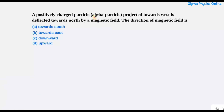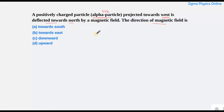In this question, there is an alpha particle — a positively charged particle — projected towards the west, and under the influence of a magnetic field the alpha particle was deflected towards the north. We'll have to find in which direction the magnetic field is acting. Let us understand this through this video.